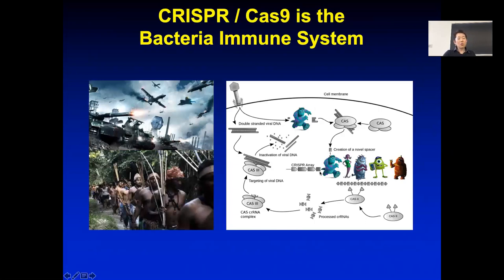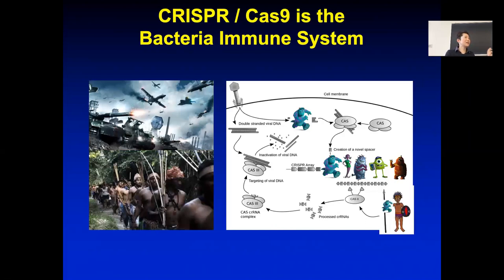Why is this useful? This region gets transcribed into RNA. You can think of this as the police station making photocopies of what the bad guys look like. The RNAs are like those photocopies. There is a protein in the bacteria called Cas—and Cas9 is one of these Cas proteins. Cas acts like the little police officer in the bacteria. When it goes to work, the police station says: go take a photo and patrol the cell.